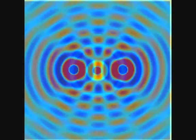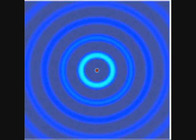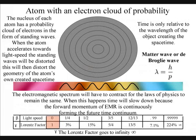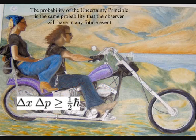But when we zoom in to an individual atom, we find time-independent quantum mechanics, and there is no flow or arrow of time, and all we have is an electron cloud of probability. The probability of the uncertainty principle is the same probability that the observer will have with any future event.